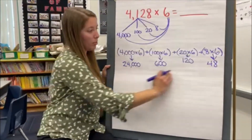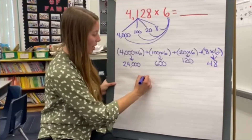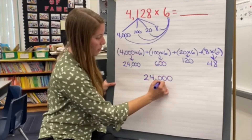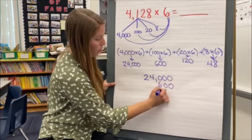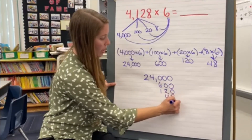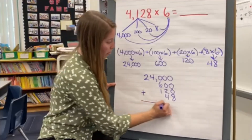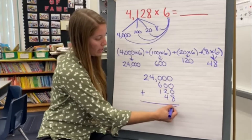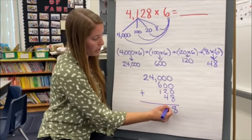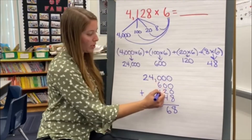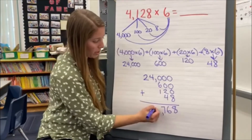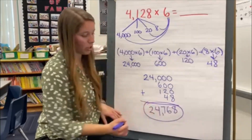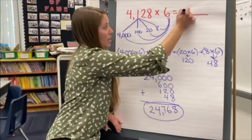So now I just need to put all those numbers back together to find my answer: 24,000, 600, 120, and 48. Being careful as you stack up to make sure each place value is lined up. 0 plus 0 plus 0 plus 8 is 8; 0 plus 0 plus 2 plus 4 is 6; 0 plus 6 plus 1 is 7; 4 is 4; 2 is 2. So our answer is 24,768.